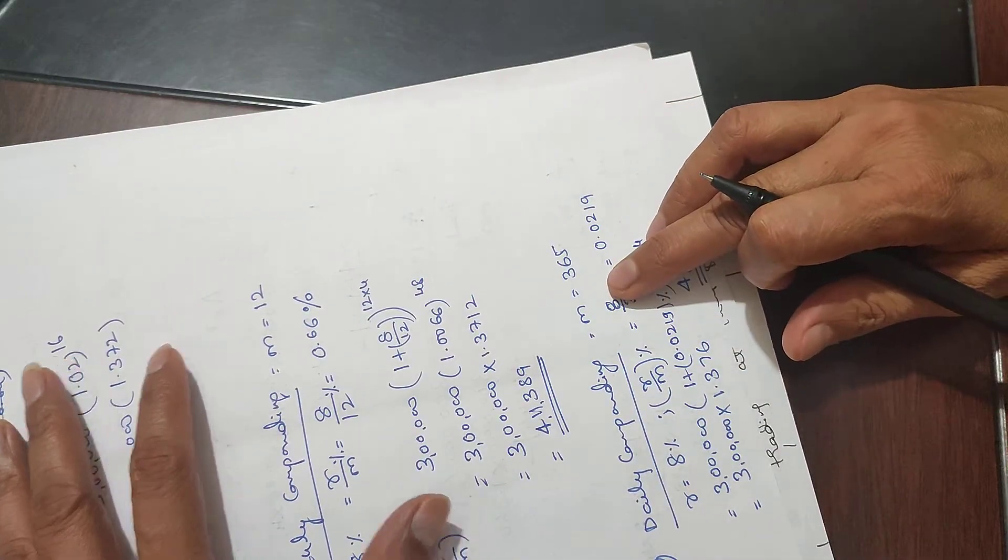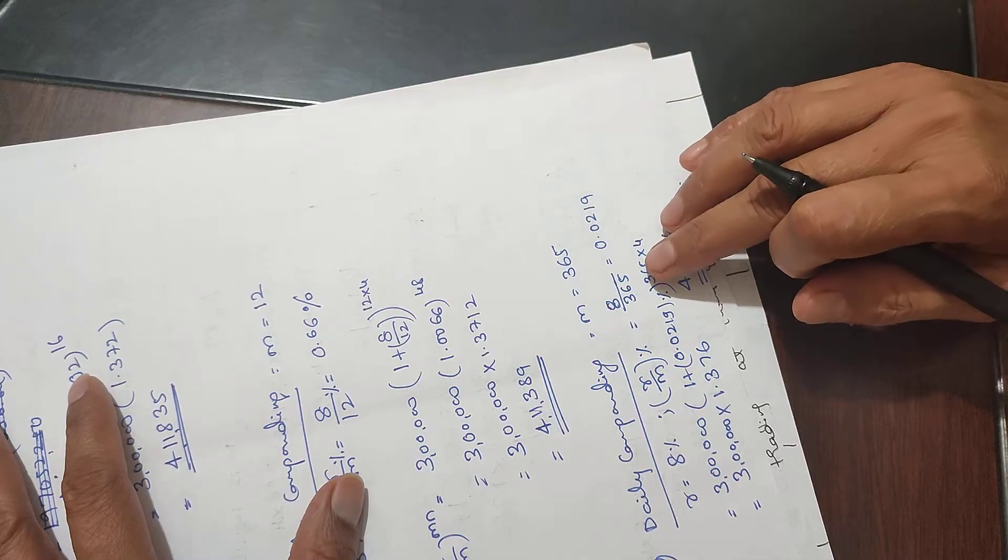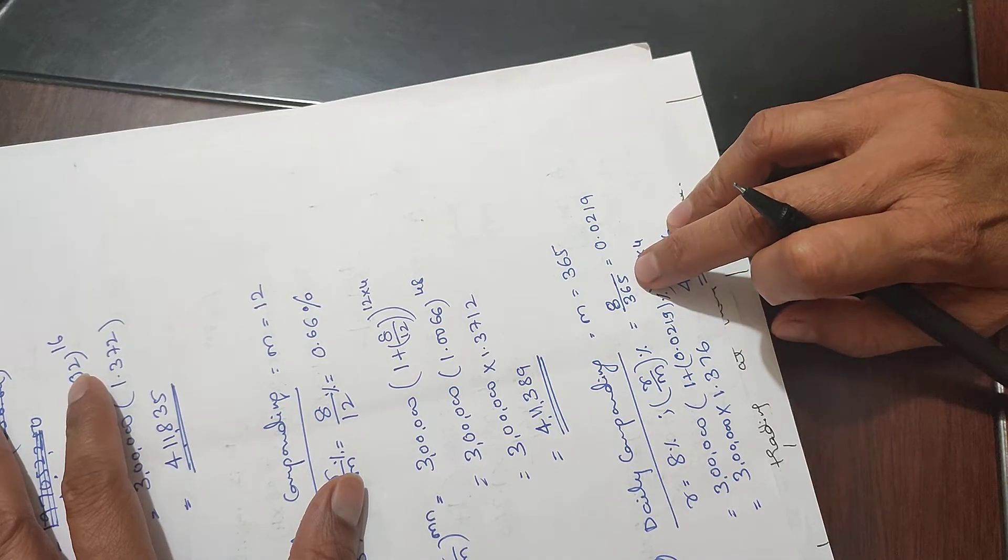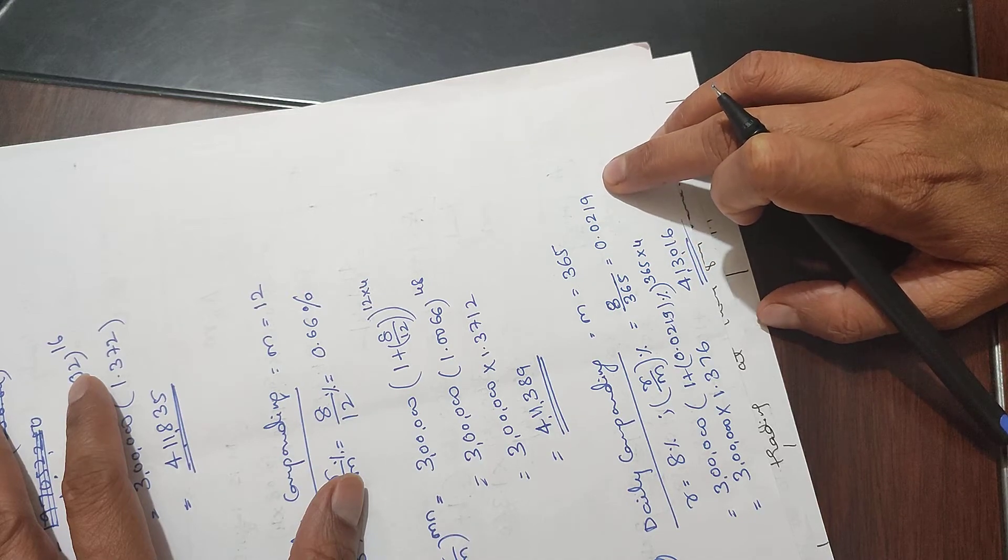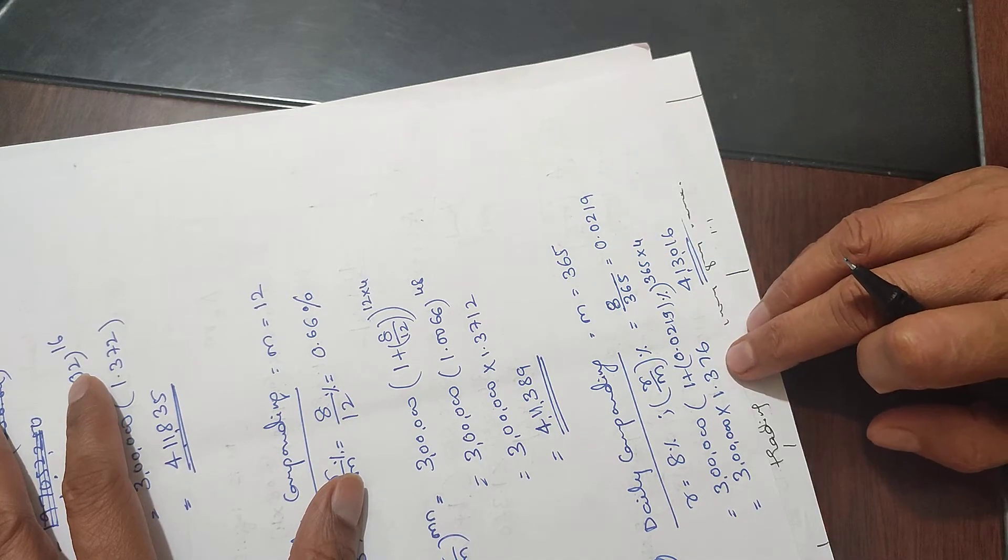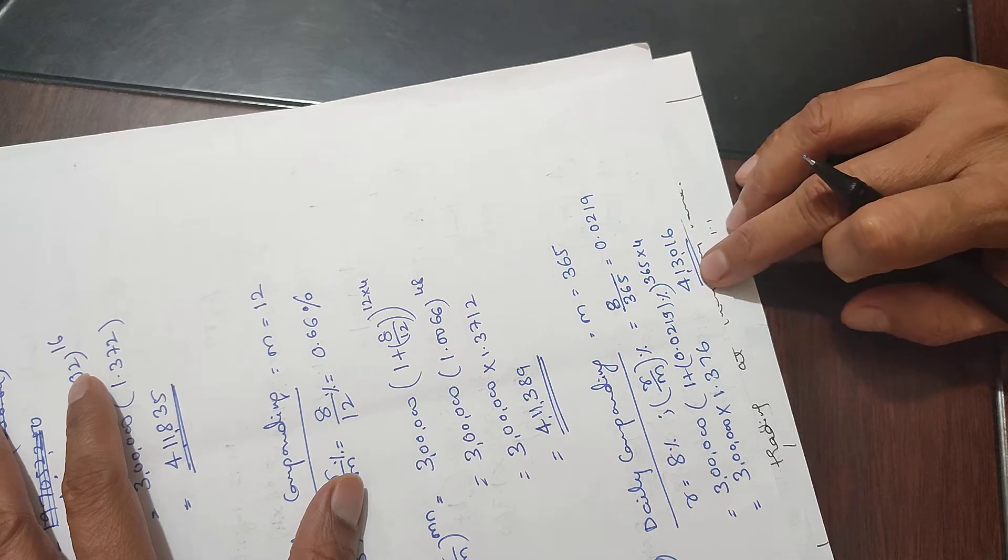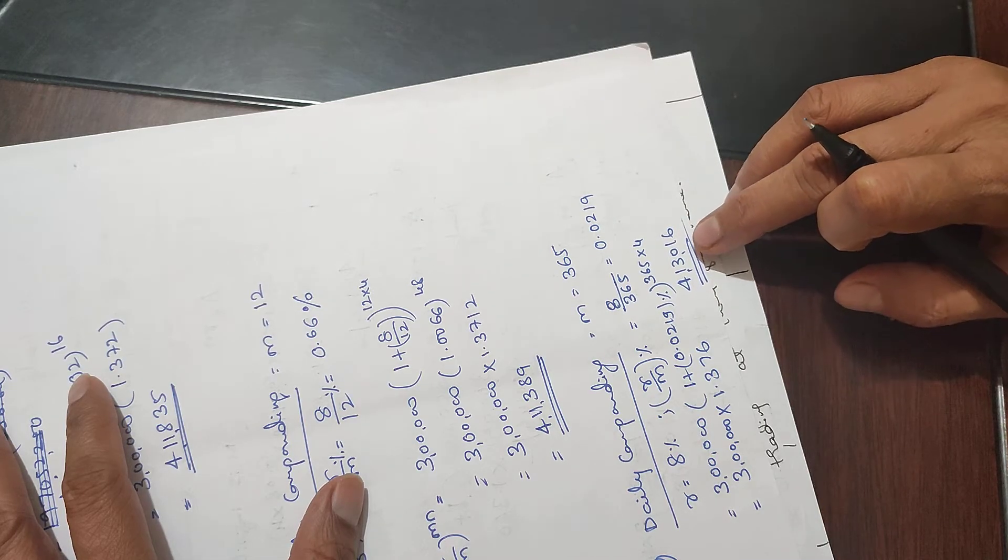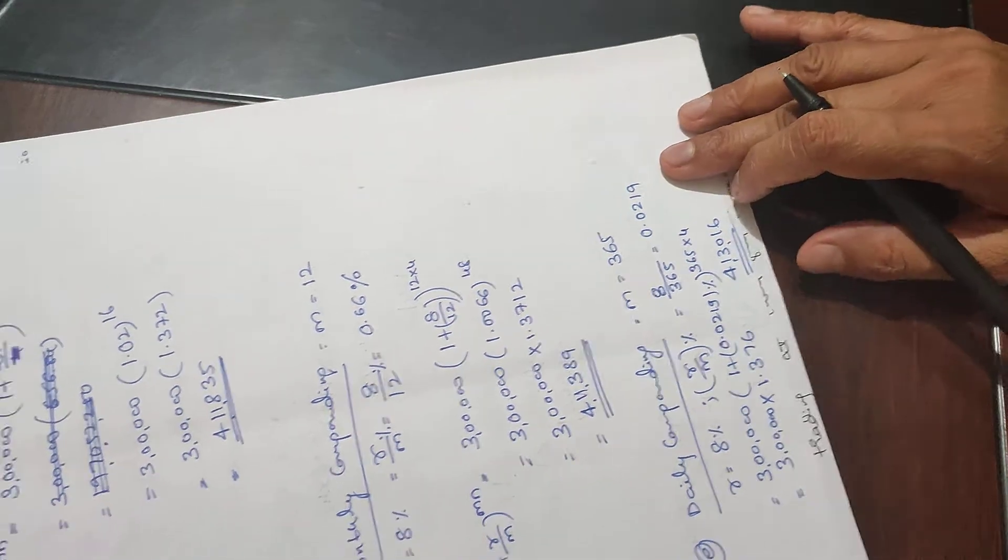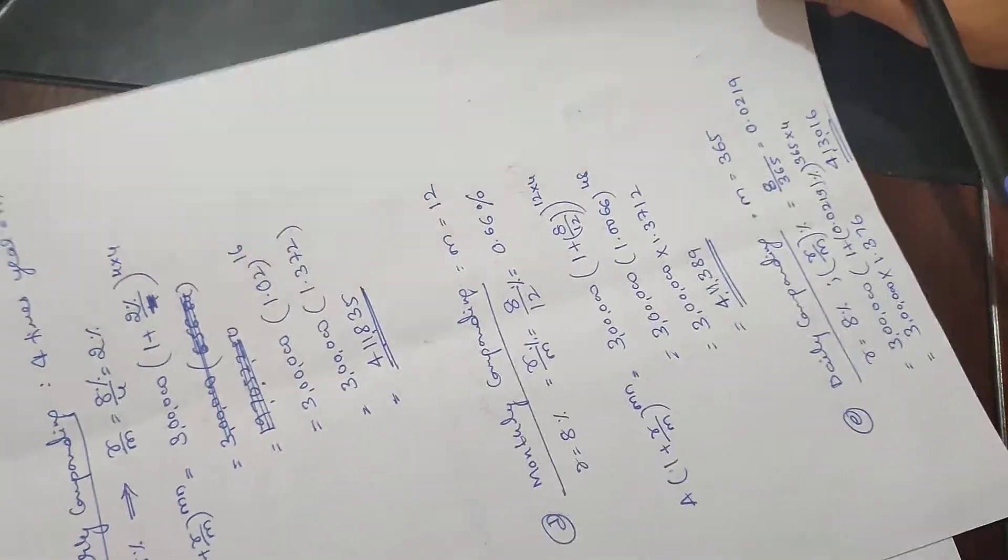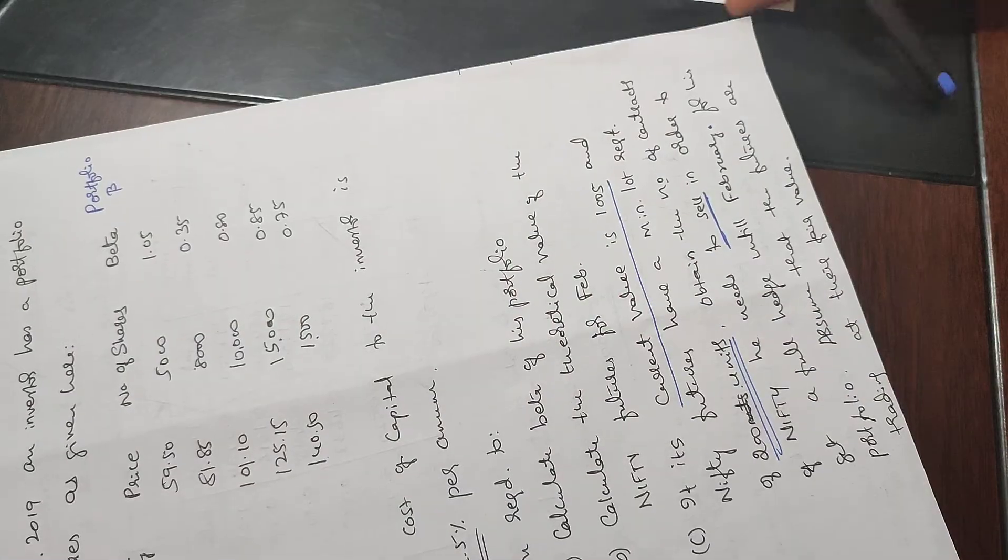Daily compounding: M equals 365 days. So 8 by 365 equals 0.0219 percent. That gives us 4 lakh 13,016 rupees. This is how we calculate daily compounding, monthly compounding, and quarterly compounding.